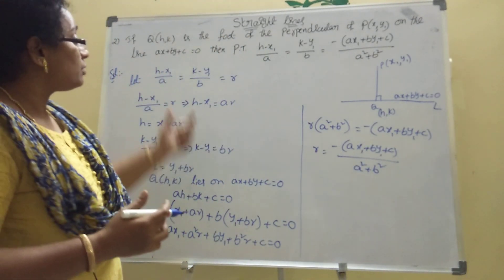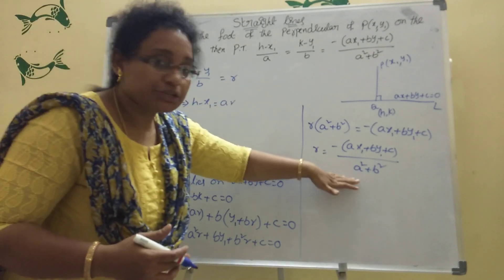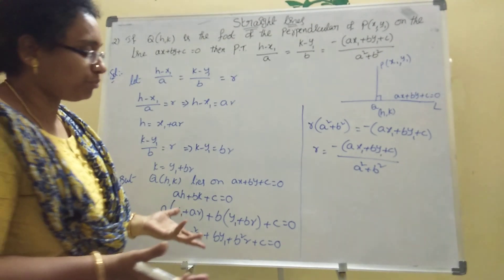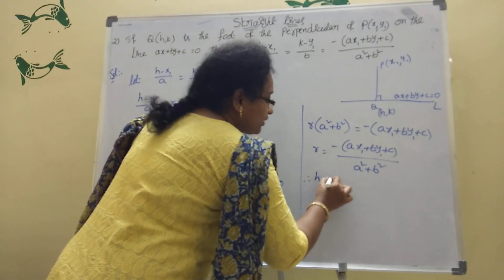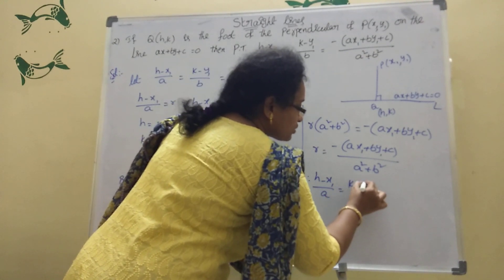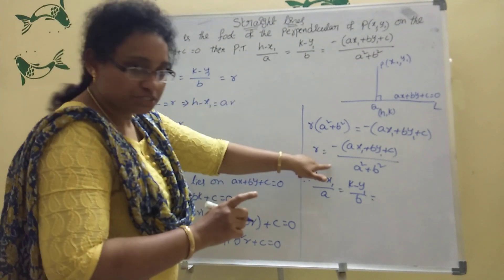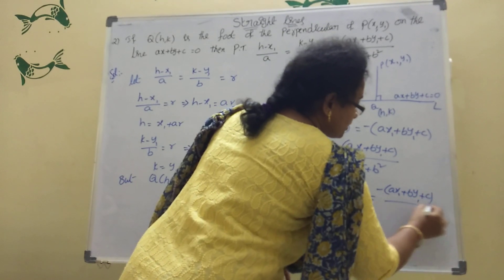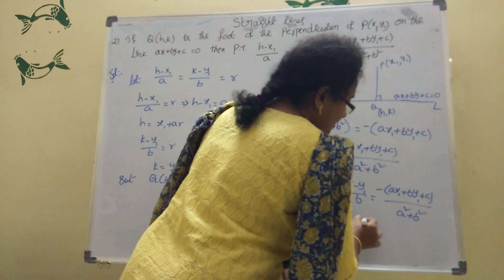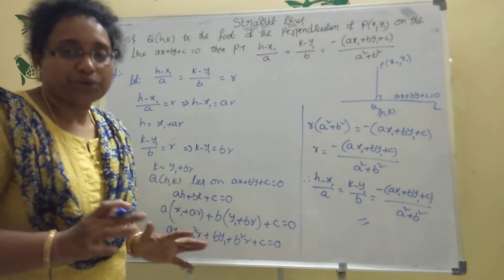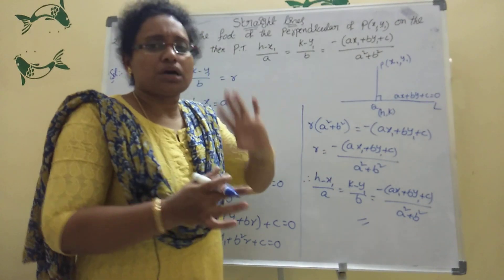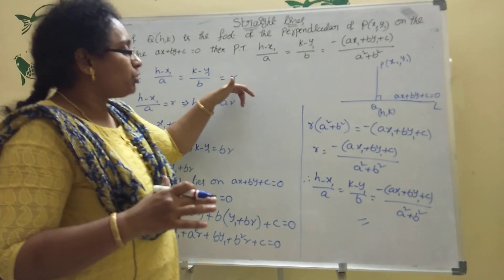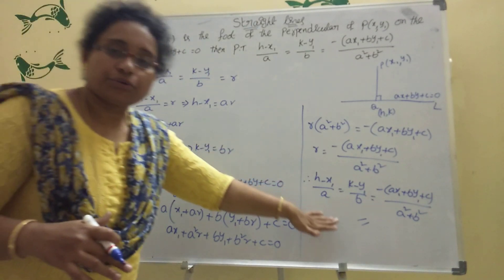We get r = −(ax₁ + by₁ + c)/(a² + b²). Substituting back: (h − x₁)/a = (k − y₁)/b = −(ax₁ + by₁ + c)/(a² + b²). This is the Foot of the Perpendicular theorem. It's easy — find both slopes, use m₁m₂ = −1 to get half the result, then substitute the point on the line to find r.